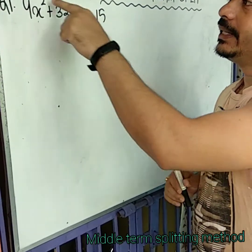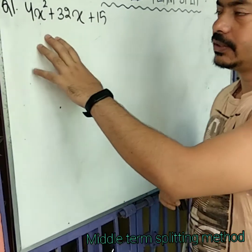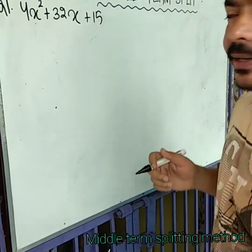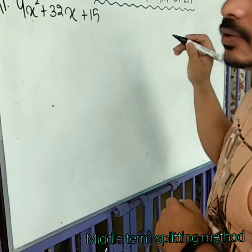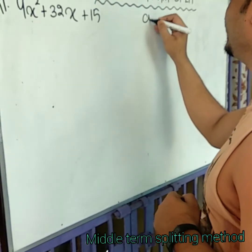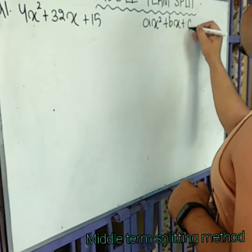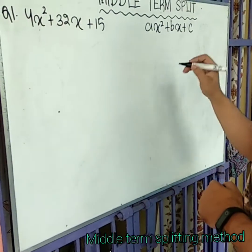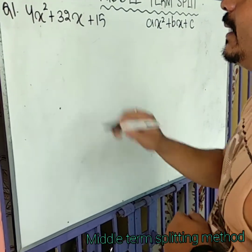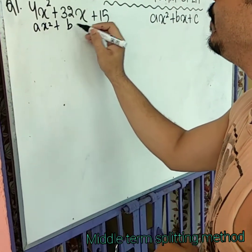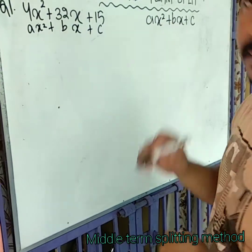This polynomial is 2 degrees so that's why this is known as your quadratic polynomial. The quadratic polynomial is in standard form that is ax² plus bx plus c. So, here you can see ax² plus bx plus c.